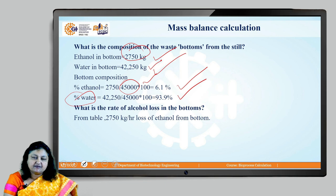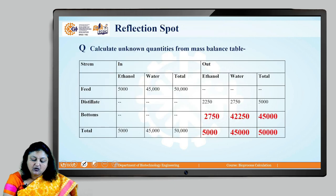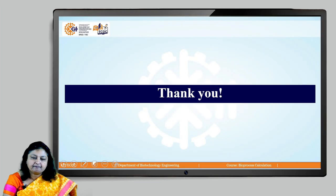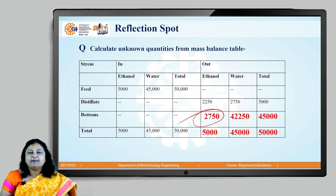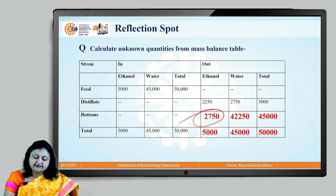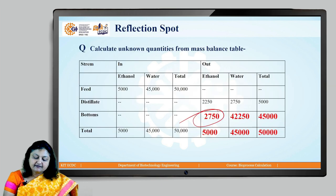The next specific question is: what is the rate of alcohol loss in the bottoms? From the mass balance table, the alcohol loss from the bottoms is 2,750 kg per hour. To summarize the completed table: bottom ethanol = 2,750, bottom water = 42,250, bottom total = 45,000; distillate = 5,000; feed total = 50,000. Thank you.